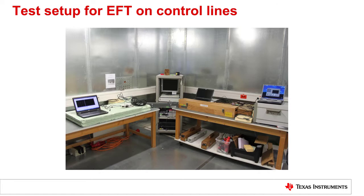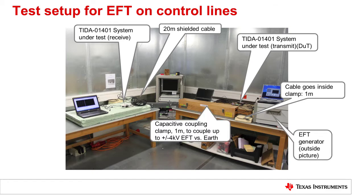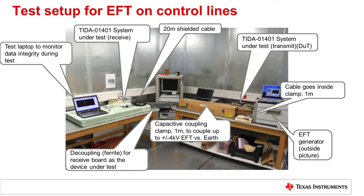Here you can see the test setup of the EFT test on the port for control lines. The system under test and the cable connecting the two boards can be seen in this image. The EFT generator with the capacitive coupling clamp generates the EFT events on the cable. Decoupling ferrite is used to protect the received side of the test system, and a laptop is needed to read out the error counts of the system.